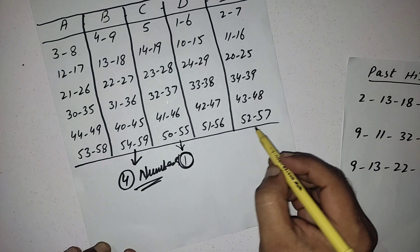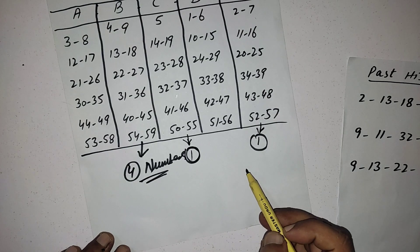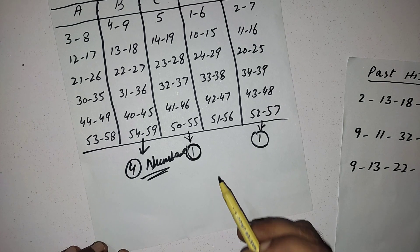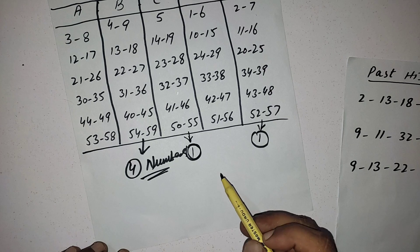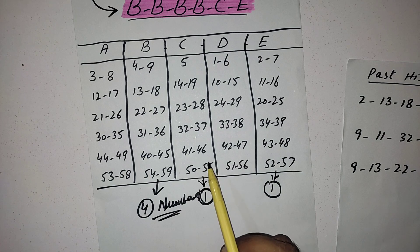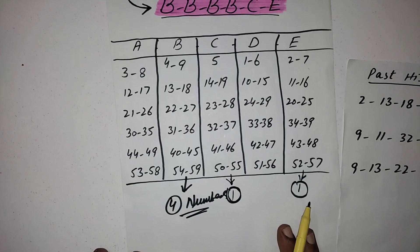And one number from E category. You got six numbers. This is your set. This strategy you will apply on every draw in the future draws, then you will see you will win very soon. Also write down these five categories in your notebook or take a screenshot. It will give you help in your lottery.